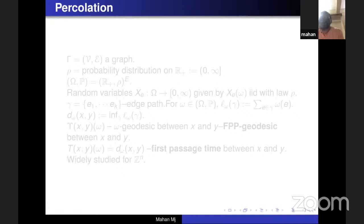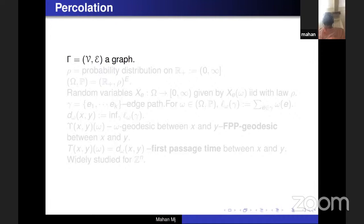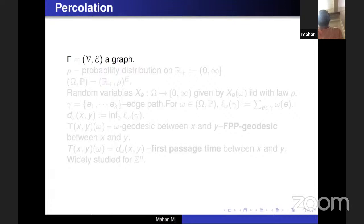Being a geometric group theorist by training, we'll try to discretize the problem, which is also a very natural thing to do. Assume you have a network of pipes, and you allow water to come in through one place — then the water will flow through the pipes, which are like a grid in some space. How fast does the water reach a point? That's the kind of problem we are trying to address. This network of pipes is going to be modeled by some graph — locally finite, with uniformly bounded valence, meaning the number of edges incident on a particular vertex. You have a vertex set and an edge set, and the two together form your graph gamma.